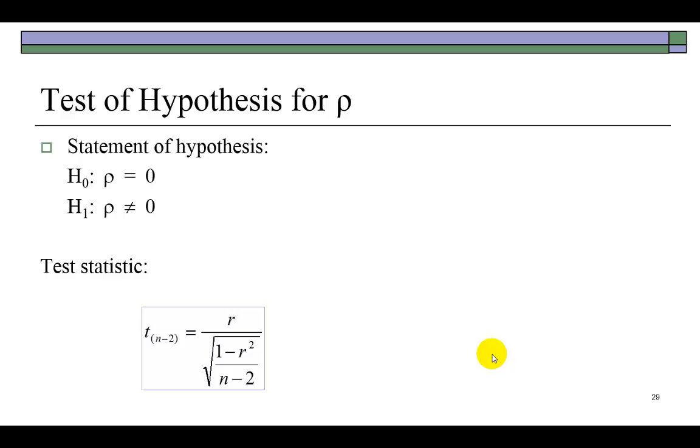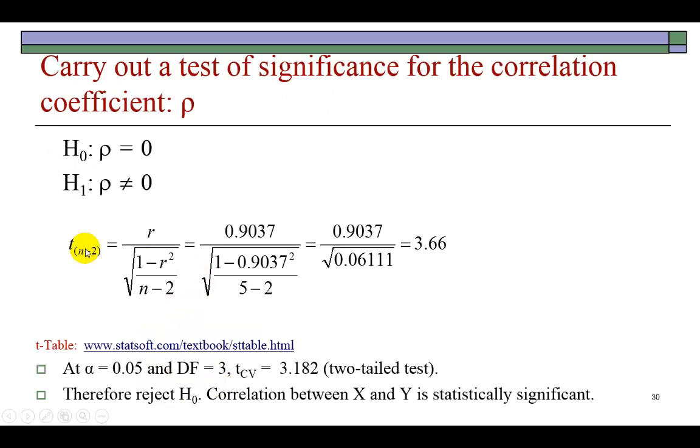We can test hypothesis to determine if the correlation coefficient between the two variables is statistically significant. In a two-tailed test designed in this form, this is going to be the t statistic. The test statistic, which has a t distribution with n minus 2 degrees of freedom. This is the correlation coefficient, and this is the correlation coefficient squared. And this is your sample size n. With the data we have, we find this t value to be 3.66.